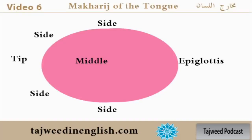As you can see in this slide, we have a description of the points of articulations of the tongue. The front of the tongue, close to the front teeth and lips, is called the tip — taraf ul-lisan. The sides are called hafat ul-lisan. Then wasat ul-lisan, which is the middle. And then al-lahah, which is the back, also known as adna ul-lisan — the closest area to the mouth.